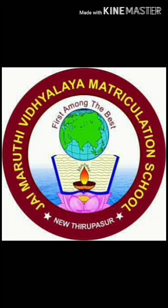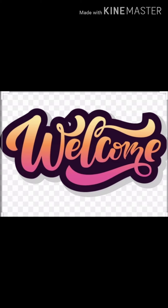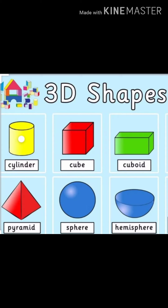Good morning students. Welcome to Max online group. Today we are going to learn about 3D shapes. What is meant by 3D shape? The 3D shapes are solid objects that have 3 dimensions. The 3 dimensions are length, width, and height.